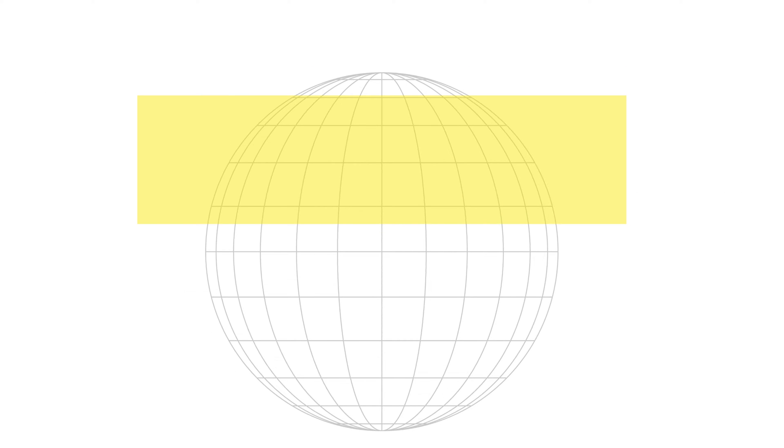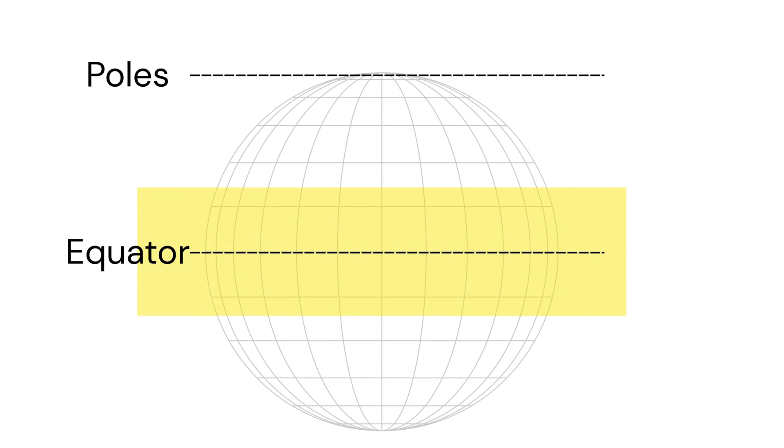I have shown you an example somewhere around here, between the poles and the equator. Let's look at an example near the equator. At the equator, 0 degrees latitude, meridians appear nearly perpendicular to the equator.